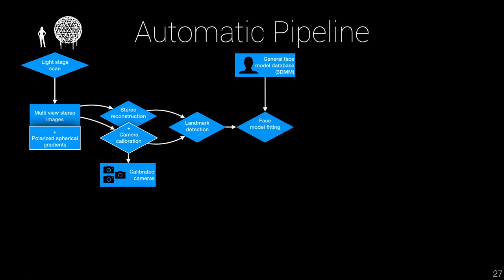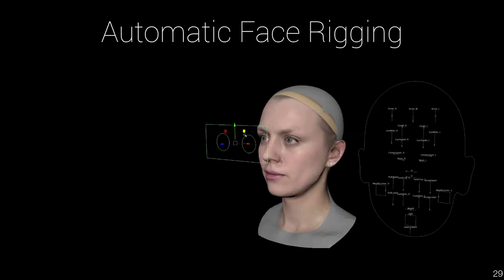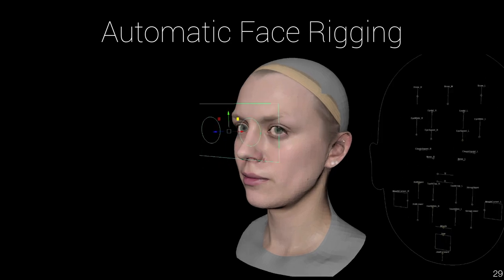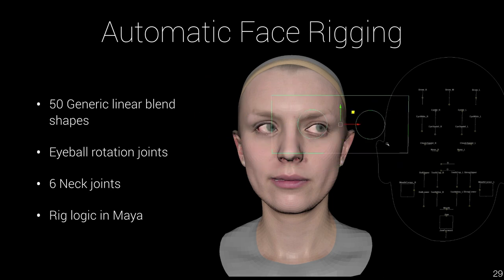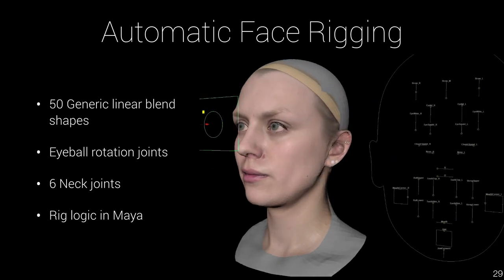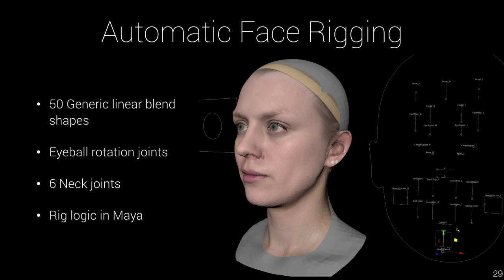Now that we have looked at identity and expression registration, the next step is to build an animatable face rig. By taking the generic expression shapes and applying them to a scanned identity neutral, a well-defined rig of joints and controls can be created for use in animation and tracking. When we have the model rigged with expression shapes, the next thing to do to render this properly is texture mapping.